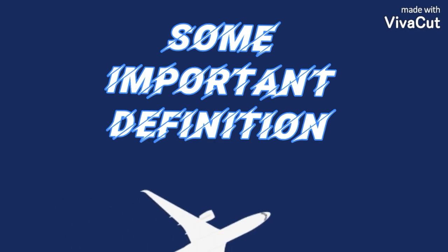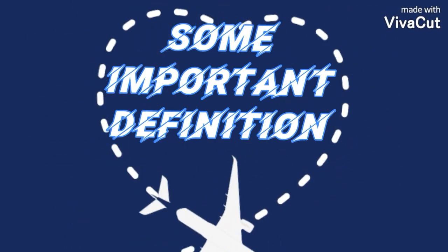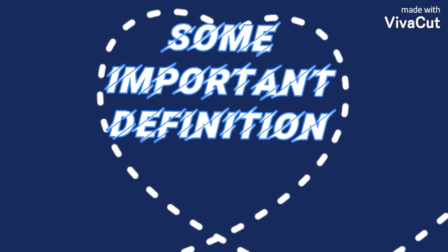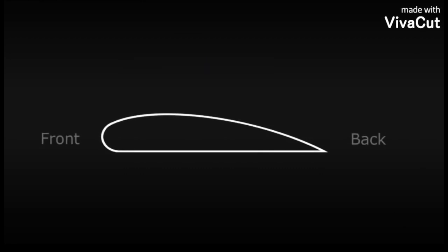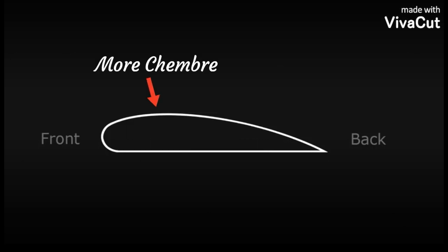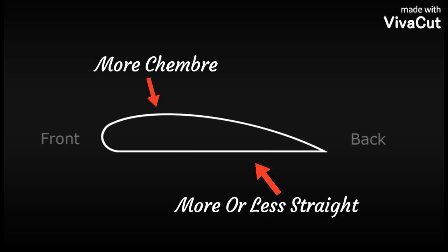Thrust and drag is clear — thrust is used to overcome the drag of an aircraft. Now we have some important definitions and terms which are mostly used in aviation. First is aerofoil. It's just a body design or shape which we are seeing on the screen. Aerofoil produces more lift than drag. The typical aerofoil section has more camber on top and is more or less straight at the bottom.